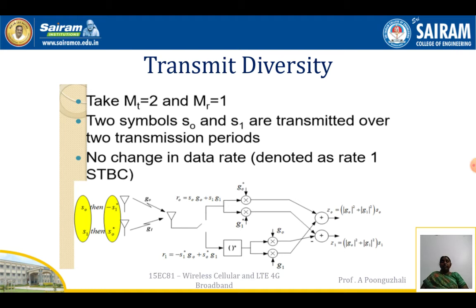Next is transmit diversity. We assume the number of transmitters Mt = 2 and the number of receive antennas Mr = 1. When two antennas transmit, two symbols are transmitted over two transmission periods, so there is no change in the data rate. We denote this as rate-1 STBC — the space-time block code.